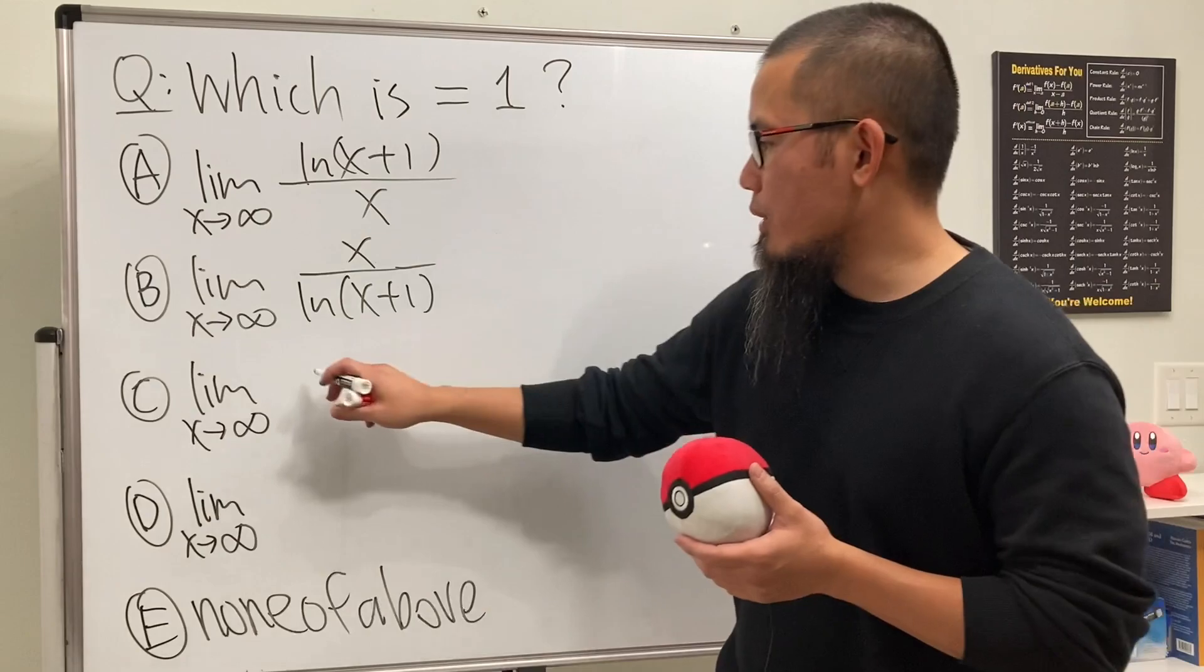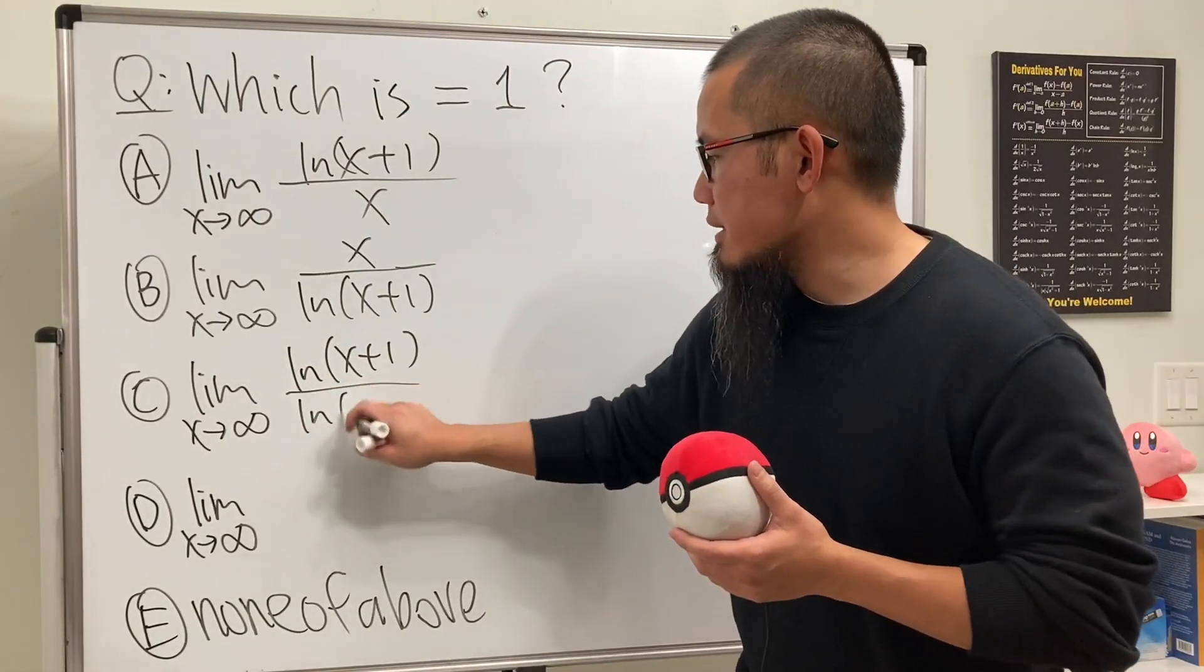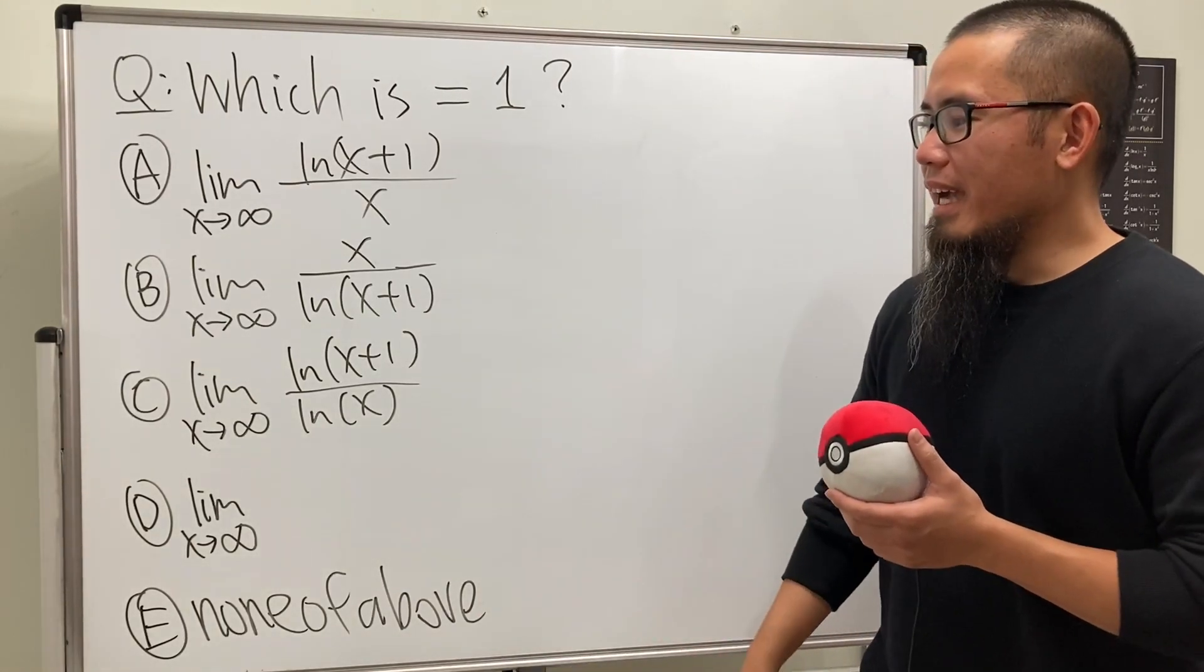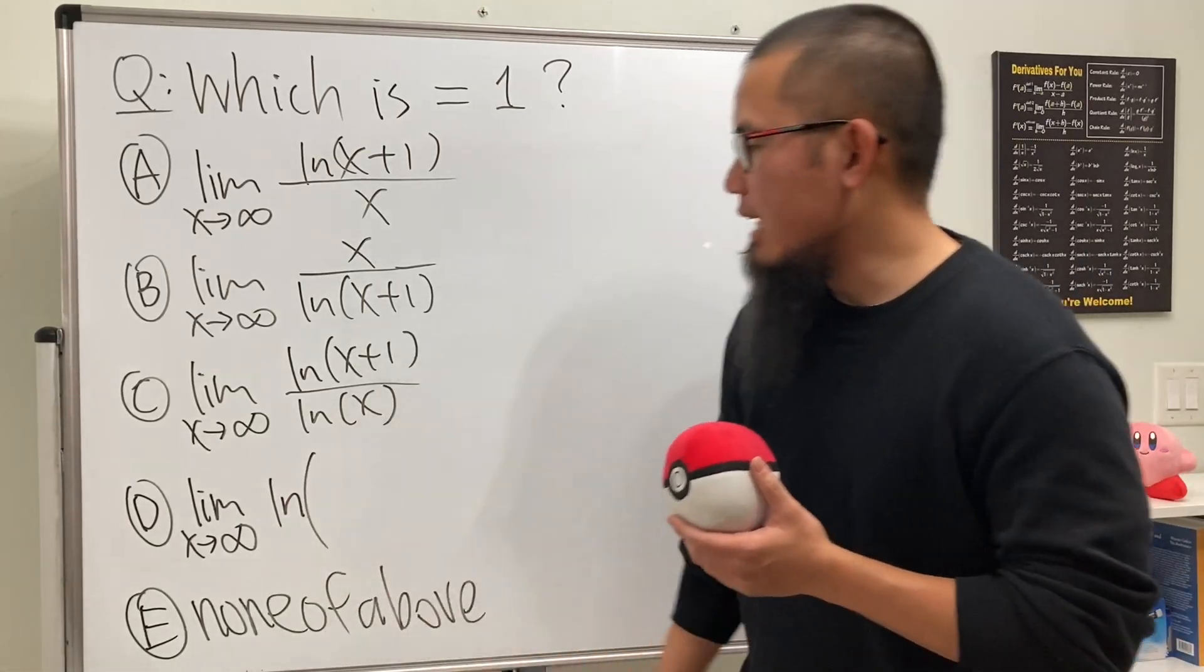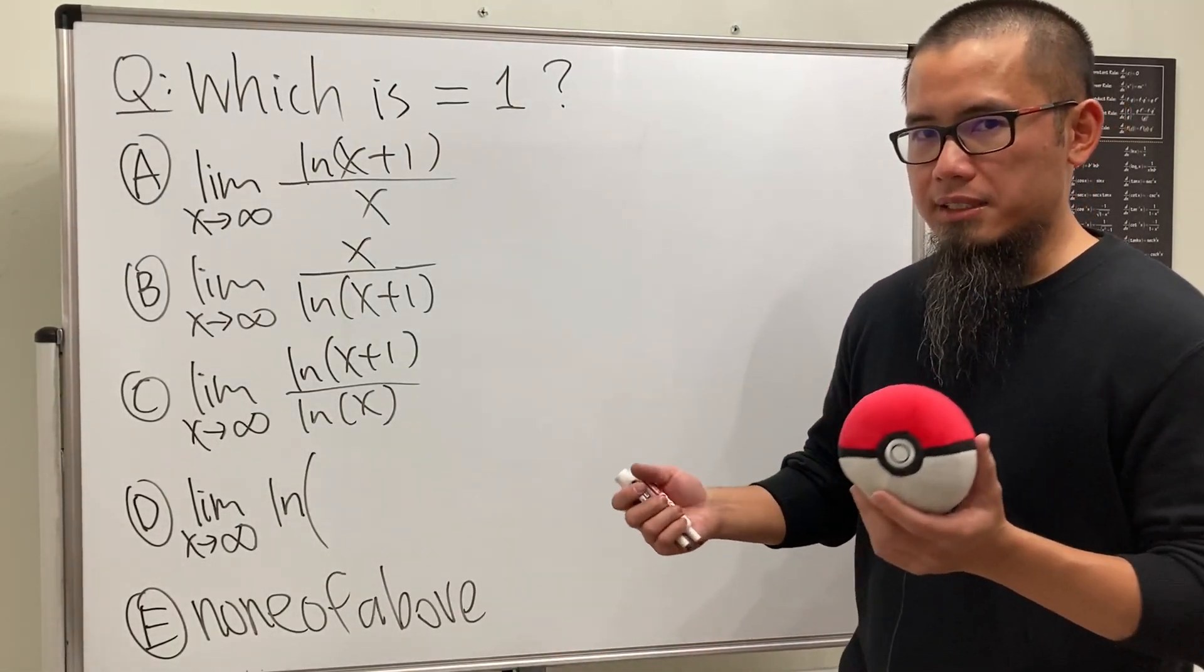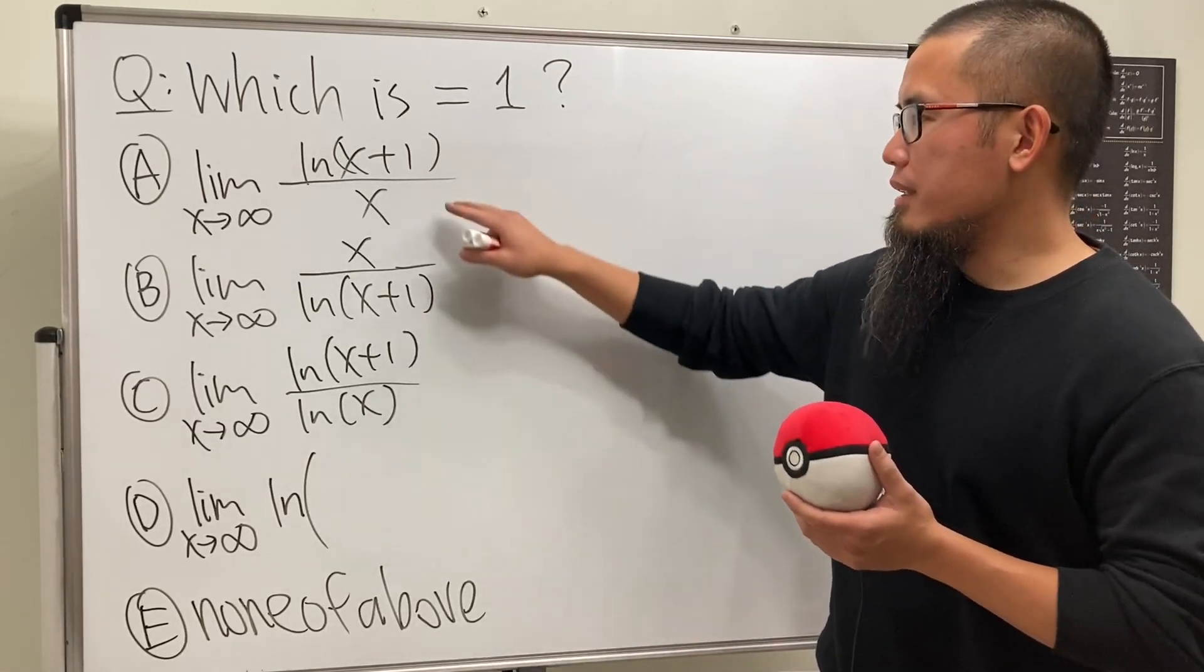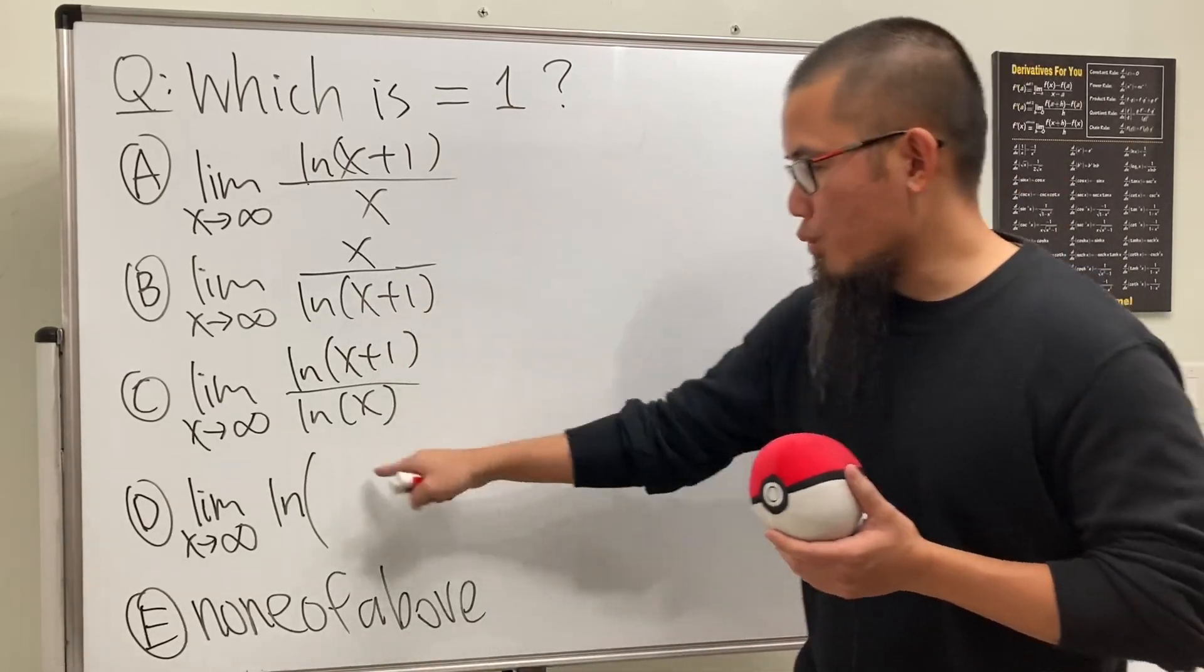And then for the next one, I'm going to do ln(x+1) over ln(x), so two ln's for choice C. And then for D, I'm going to do just one ln, but I'm going to put the x+1 and also the x inside. But you see I have the x+1 on the top right here already, and then x on the bottom, right? So I'm going to put the x and also x+1 right here, and the ln is on the outside. Yep, this is how I come up with the questions.